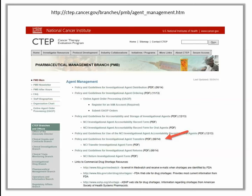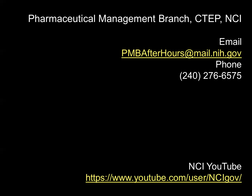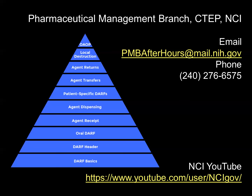To learn more, please refer to the Pharmaceutical Management Branch Policy and Guidelines for Investigational Agent Transfers available on the PMB website. Thank you for watching this video tutorial. Additional PMB Investigational Drug Accountability videos are available through your YouTube playlist. Please note that the video and any items displayed are subject to change — check back periodically for updates. Questions can be directed to the Pharmaceutical Management Branch, CTEP NCI, by phone at 240-276-6575, Monday through Friday from 8:30 a.m. to 4:30 p.m. Eastern Time, or by email at pmbafterhours@mail.nih.gov anytime.